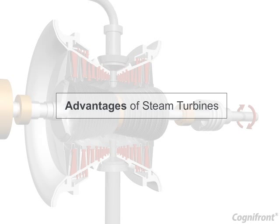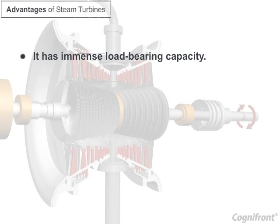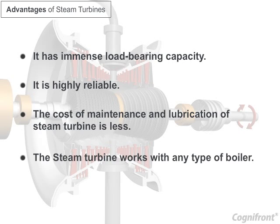Advantages of steam turbines: it has immense load bearing capacity. It is highly reliable. The cost of maintenance and lubrication of a steam turbine is less. The steam turbine works with any type of boiler.